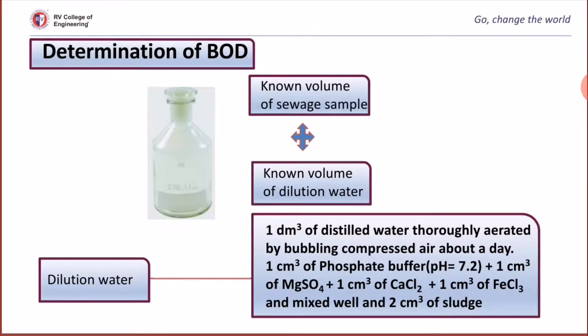In the determination of BOD, sewage sample is diluted with dilution water. Since the method involves biological oxidation of organic waste, we have to provide conditions like pH, temperature, and other nutrients for the microorganisms to grow. So, as the amount of oxygen present in the water sample is less, strong waste is diluted such that demand is less than available oxygen.